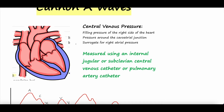Quick intro in that regard: Central Venous Pressure is often looked at as a surrogate for right atrial pressure, or the filling pressure of the right side of the heart — things we dove into in those previous videos. It's a pressure that's usually measured at the cavoatrial junction, right around here. This is the right atrium, this is the superior vena cava. You put a central line in the internal jugular or subclavian vein, and the tip sits right at this cavoatrial junction — you measure the pressure right in this area.